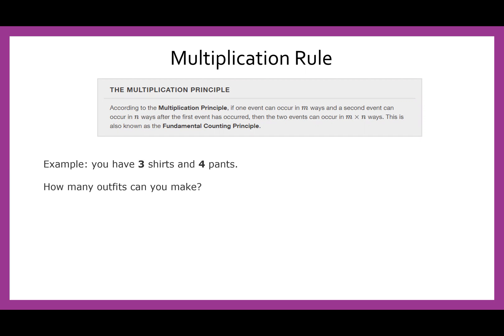If we have three shirts and four pants, how many outfits can you make? So assuming that the first event is choosing a shirt and the second event is choosing pants, we're going to have four times three outfits, which is 12 outfits.